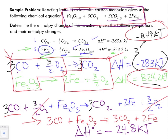A few things to be careful of: rearrange your equations so that reactants and products match those of your target, and make sure the moles also match. When you multiply all terms in an equation by a coefficient, you must also multiply the ΔH by that same value.